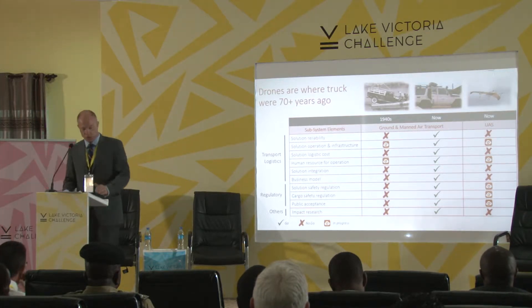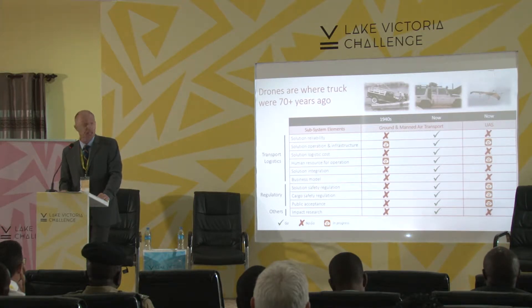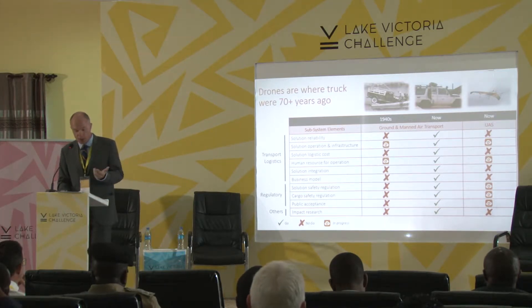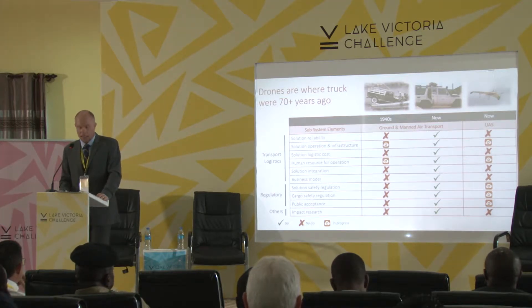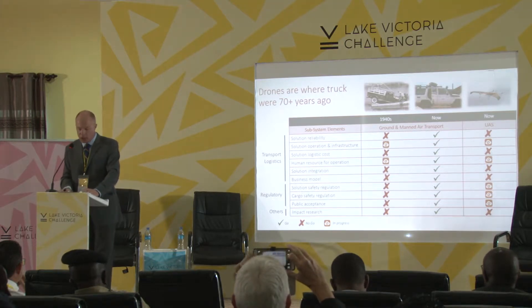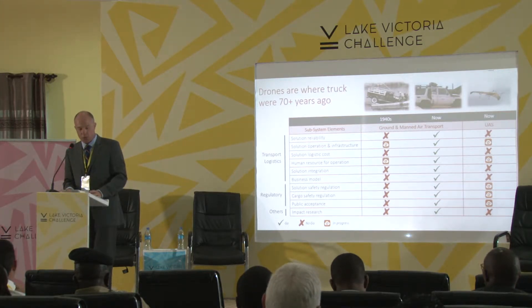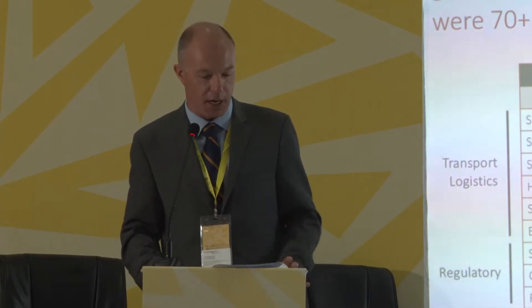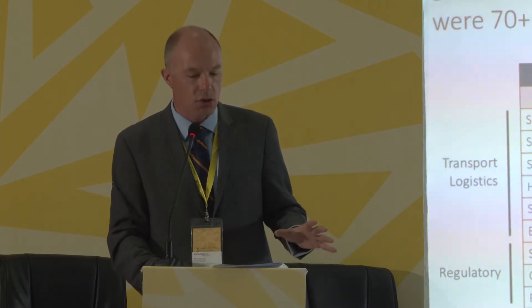Starting with technology: truck technology is reliable now, but 70 years ago, trucks were definitely not reliable, and the workforce to maintain such a new technology did not exist. Now, what about the drone? Unfortunately, I would say that currently drones are, in general, not reliable in the environment where they would be used here in Sub-Saharan Africa. There are crashes, and that is normal — we are in the early stage. Trucks crashed too, way back then, and they still do.